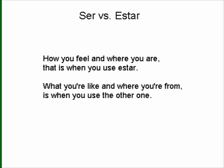Some teachers use this little rhyme to help their students remember: 'How you feel and where you are, that is when you use estar. What you're like and where you're from is when you use the other one.' If that helps you, you may want to memorize it. It's not quite as all-inclusive as the list we saw a minute ago, but it is easy to remember and it can be very helpful.